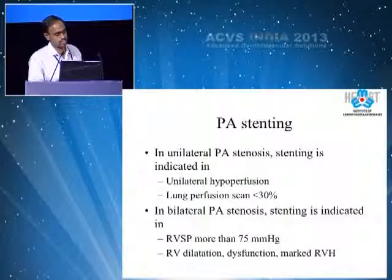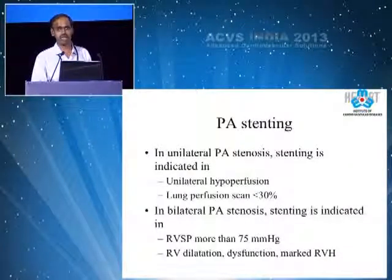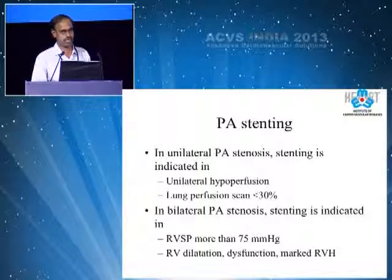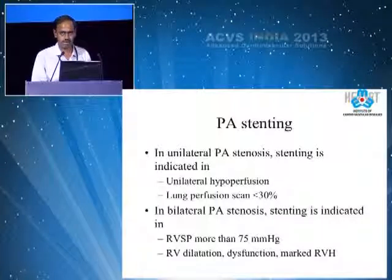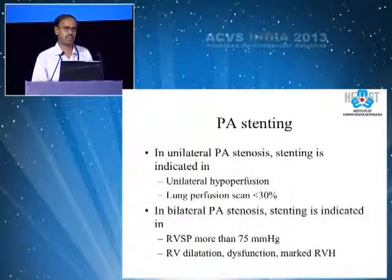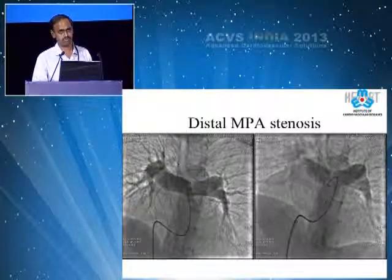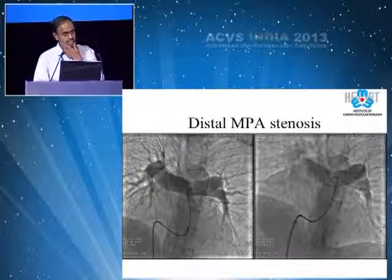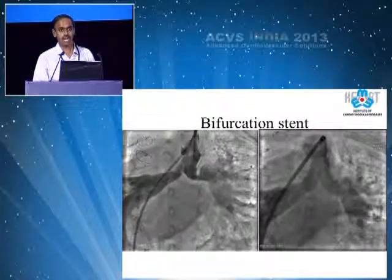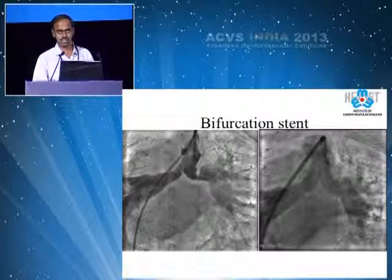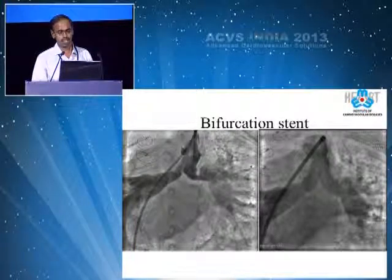Coming to pulmonary artery stenting — if there is a unilateral pulmonary artery stenosis, there will not be any elevation of right ventricular systolic pressure because there will be compensatory excessive flow into the other lung. So on an echocardiogram, if we are getting a gradient across one pulmonary artery, even something like 20 or 25 mmHg, we need to do a perfusion scan. If perfusion is less than 30% in a small baby, we need to stent it because lung growth is proportionate to blood supply.